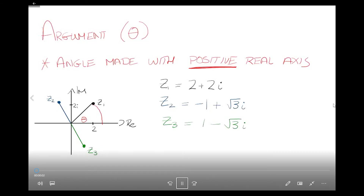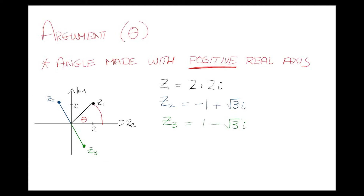The argument, or theta, is the angle made with the positive real axis. It's super important for leaving cert students to measure from the positive real axis. We generally do not use negative angles — using the positive one makes life easier when the exam insists on a positive answer. For z1 = 2 + 2i, we'll use SOHCAHTOA — specifically the tan ratio.